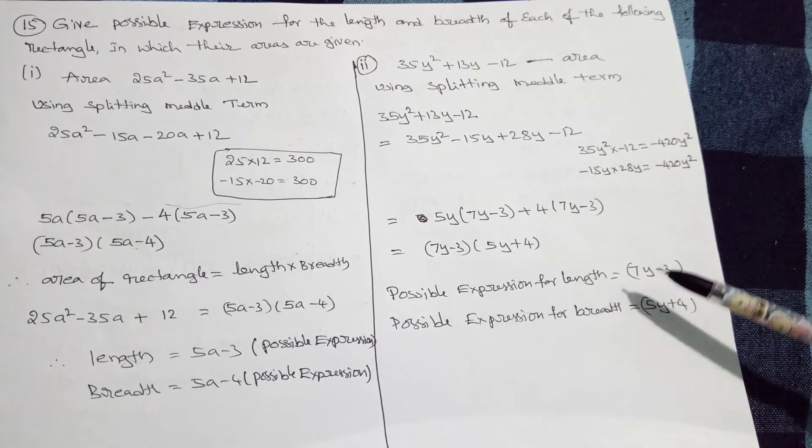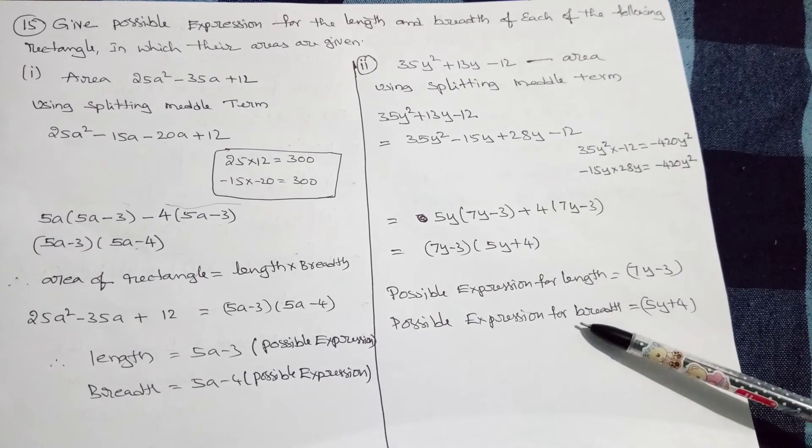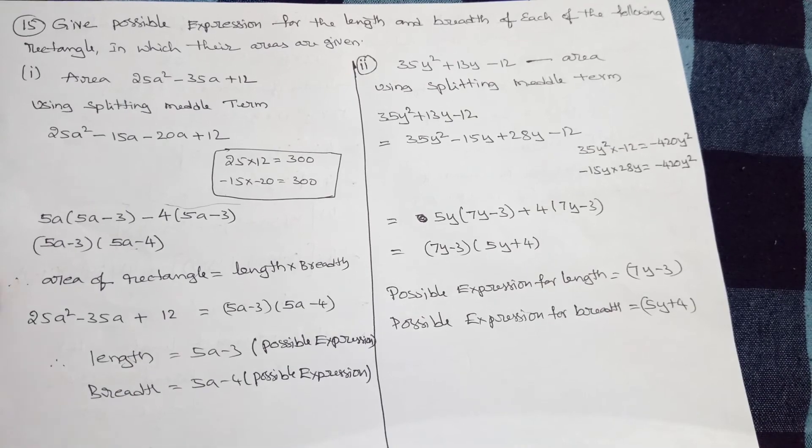Therefore, possible expression for length is equal to 7y - 3 and possible expression for breadth is equal to 5y + 4. That's all.